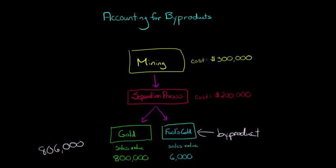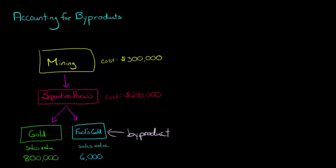And actually there are a couple different ways that we can account for this byproduct. So the one way is called the production method. So under the production method what we're going to do is we're going to recognize that byproduct in the period in which it's produced.